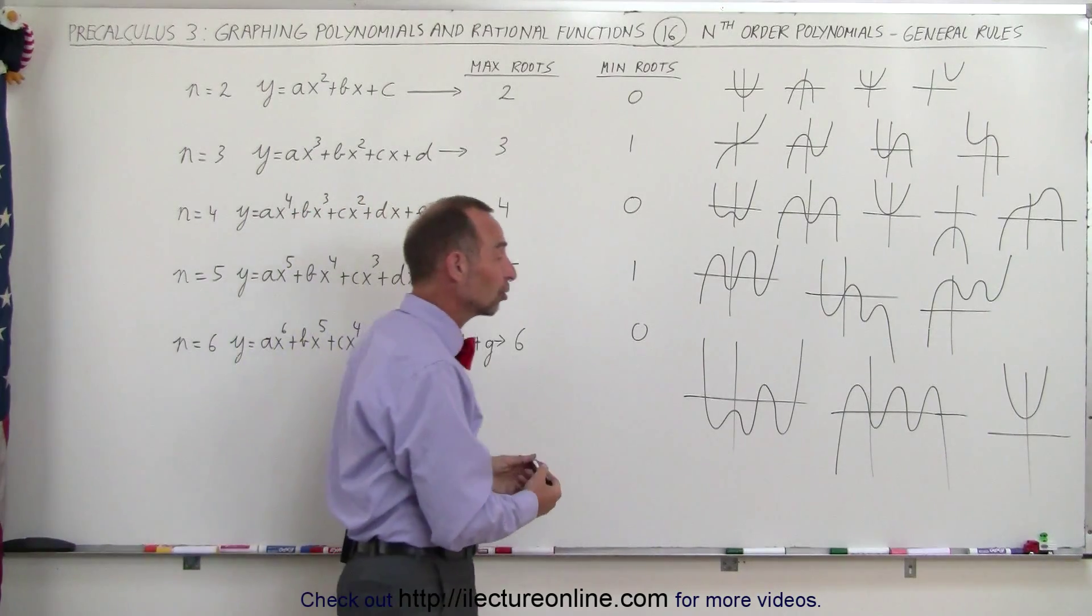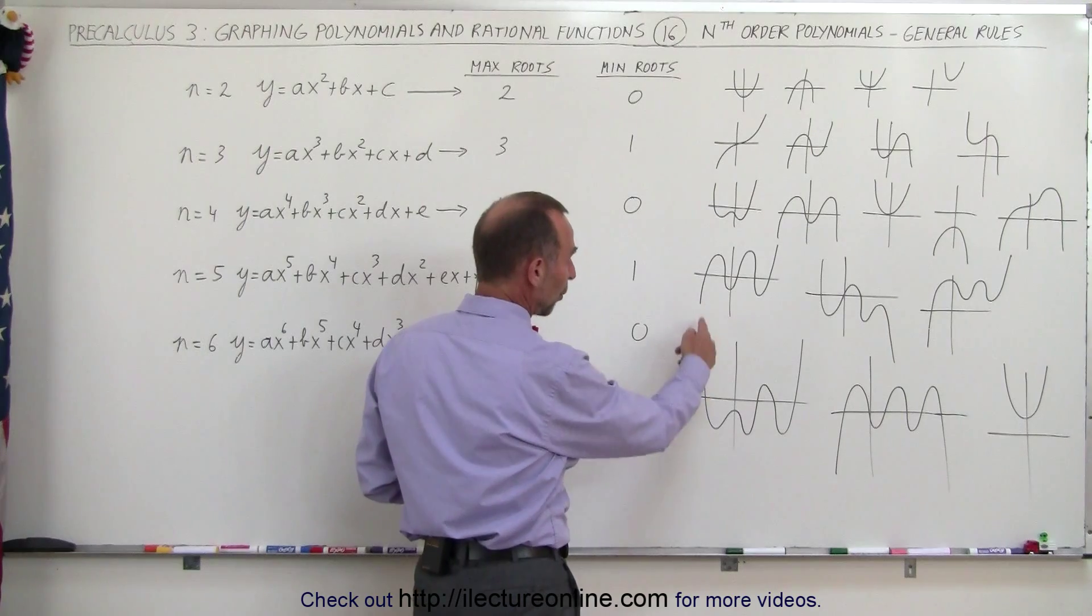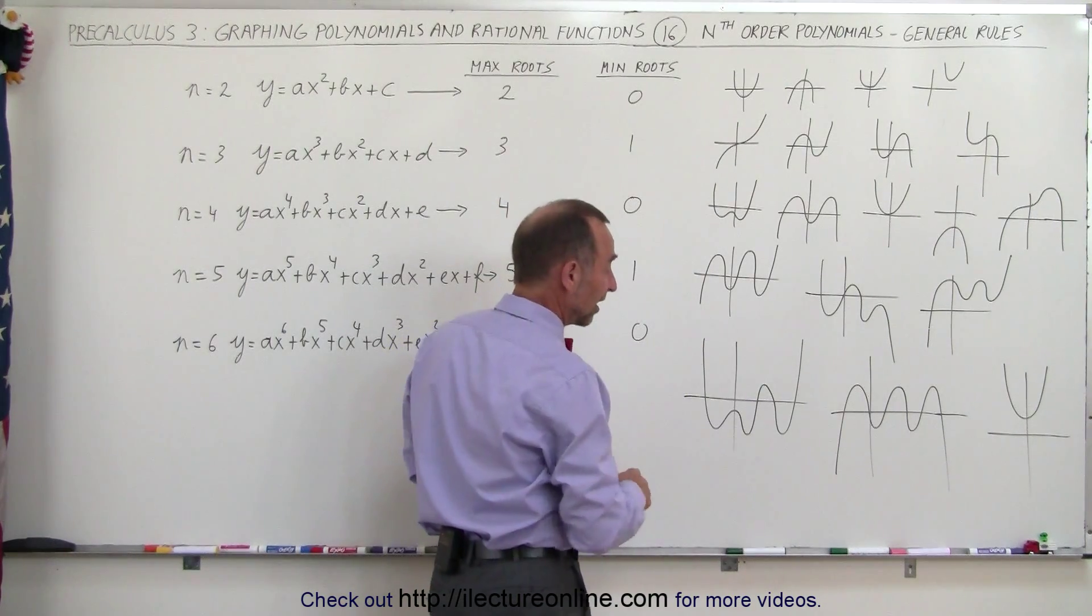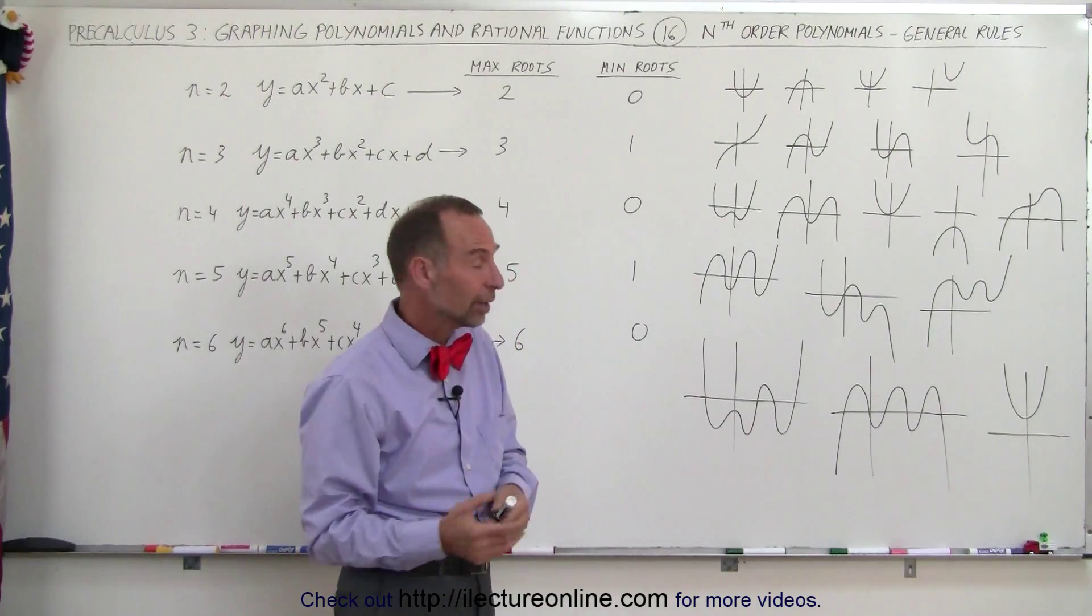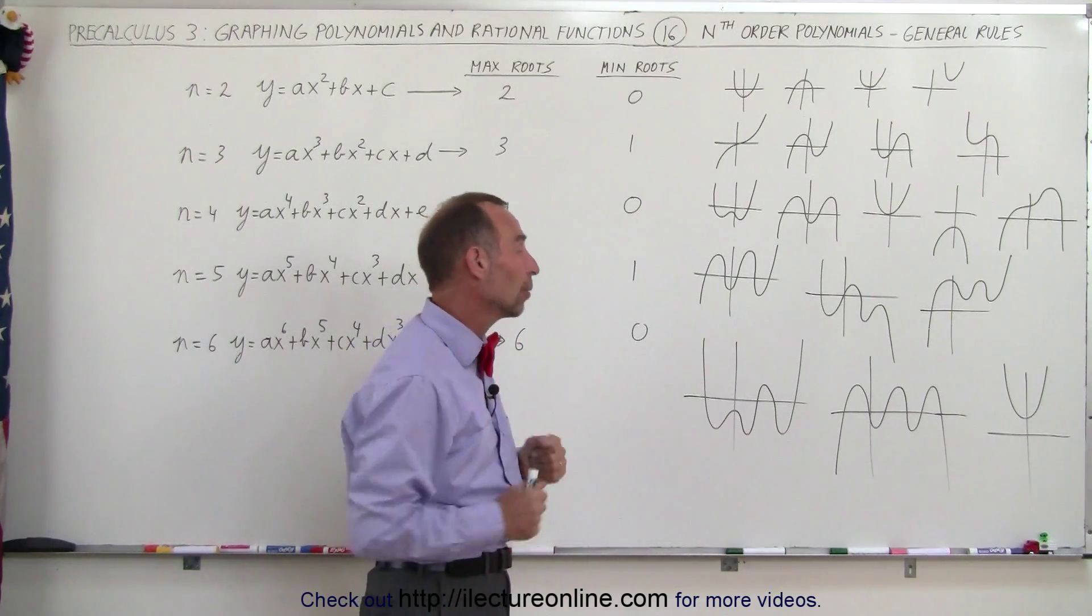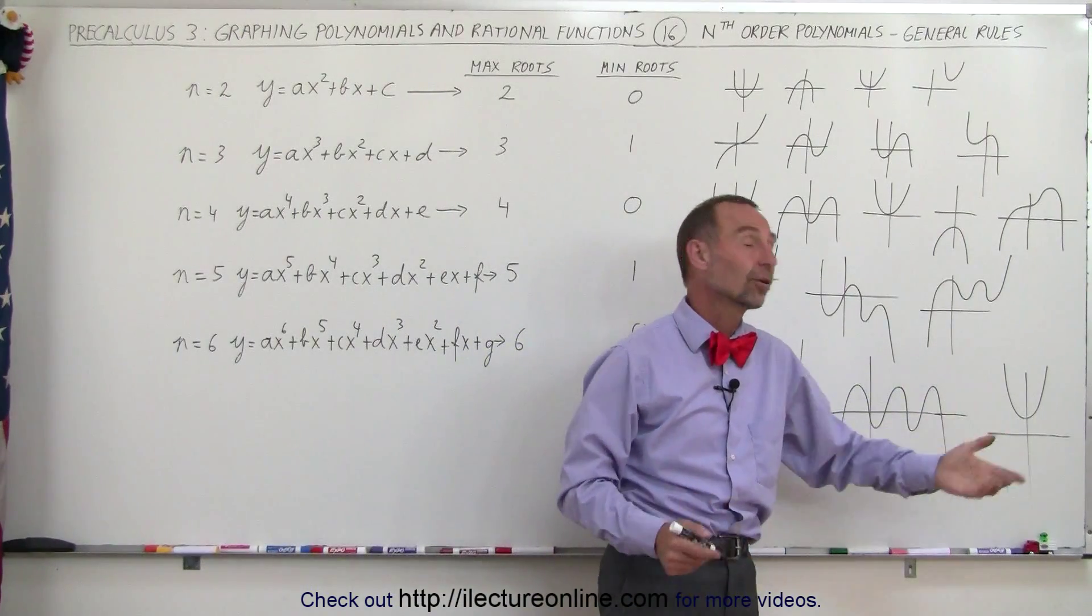Notice there's different kinds of shapes. Here's a sixth-order polynomial, where you can see you have 1, 2, 3, 4 roots. You could have 3, 4, 5, 6, 0, or 1, depending upon how it's shaped. Here's an example where there's six roots. Here's an example where there's zero roots.